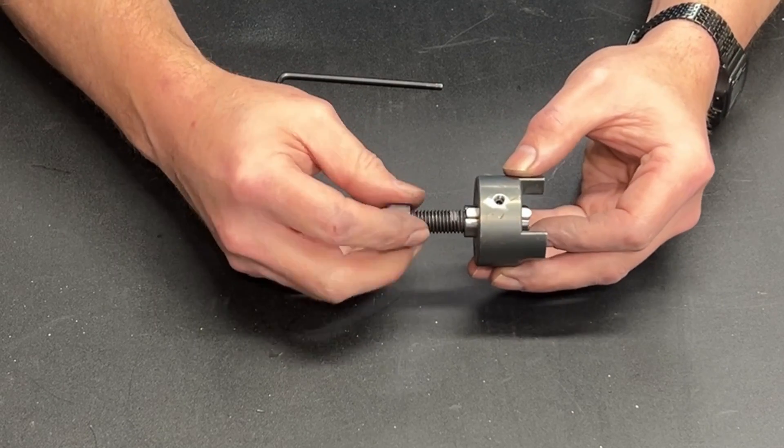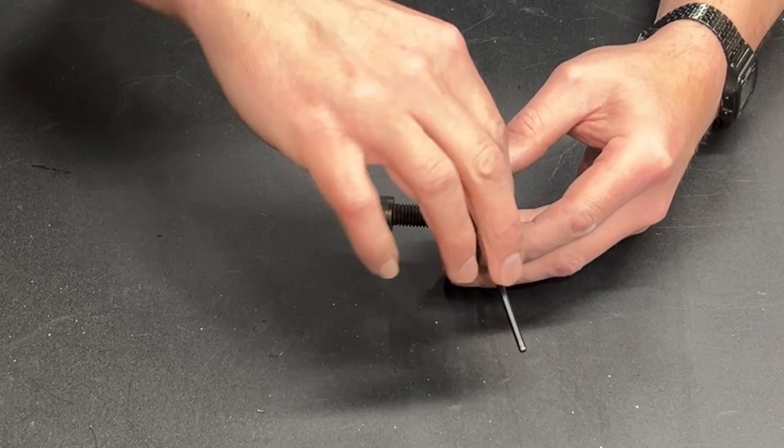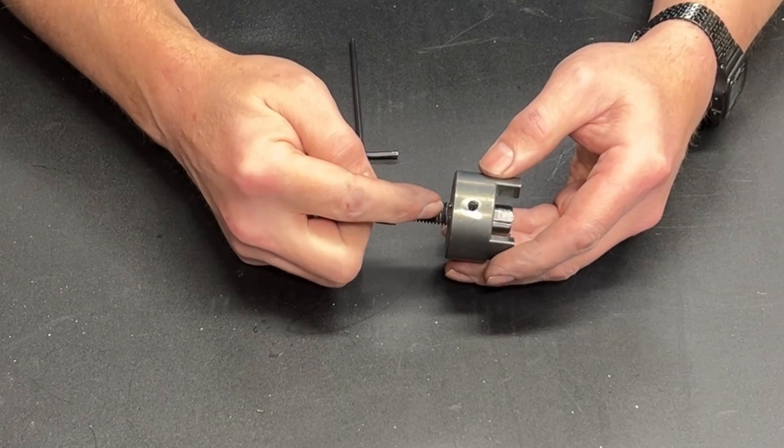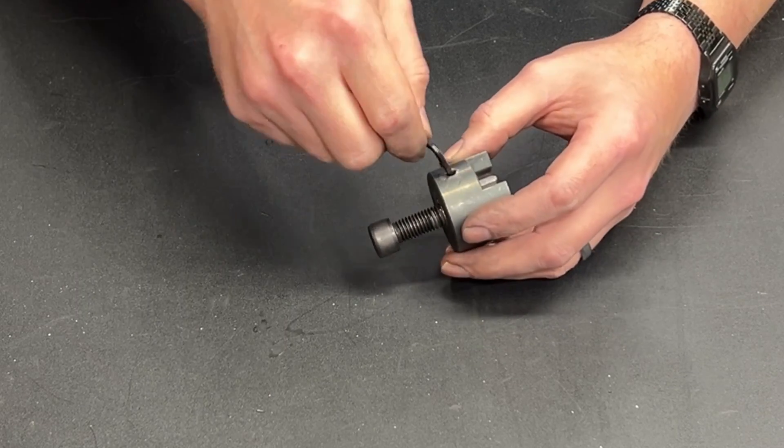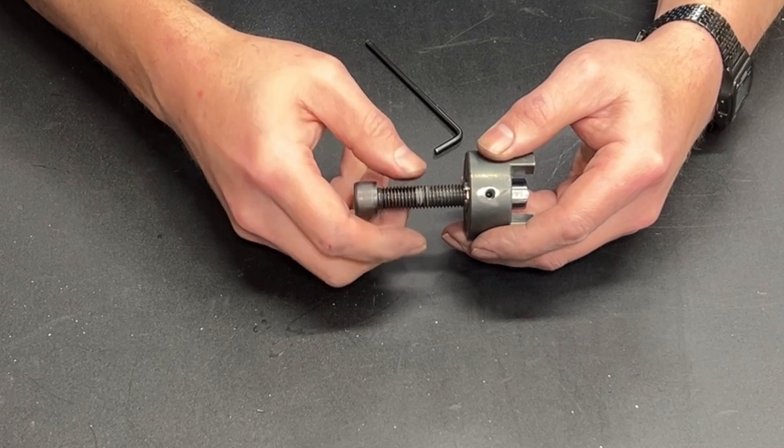So I came up with a concept for building a keyed adapter that allows you to take any kind of keyed coupler, like a Lovejoy connector, and attach it to a threaded shaft in such a way that you can lock and unlock it. And in this video, I'm going to show you how I made it.